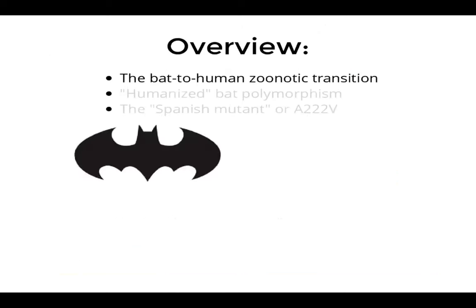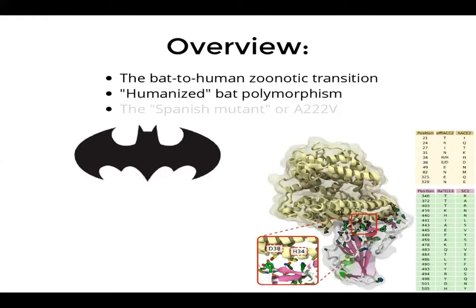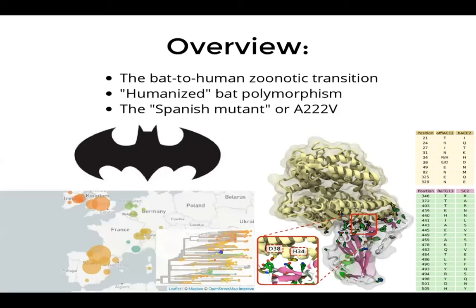I will discuss the zoonotic transition sampled using the same approach — alchemical free energies of mutations — to trace the evolutionary pathway from the bat SARS-CoV-2 variant to the human variant. I will also explore the idea of a humanized bat polymorphism as a hypothesis to explain part of this zoonotic transition, and then focus on the so-called Spanish mutant, a single mutation that emerged in Spain in mid-2020.